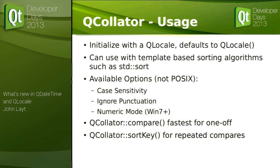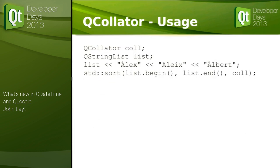Usage: you initialize QCollator with the QLocale you want — it defaults to the default locale. You can use it with standard template-based sorting algorithms. You can be case sensitive, ignore punctuation, or enable numeric mode so that 110 and 100 sort in the correct order rather than alphabetic order. You have QCollator::compare for one-offs, or you can use sort keys via the QCollatorSortKey class for repeated comparisons. Simple usage: create your collator, your list, call standard sort with begin, end, and the collator — done.